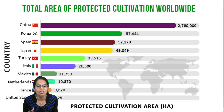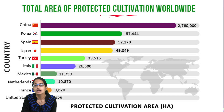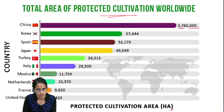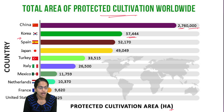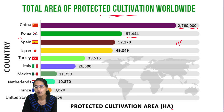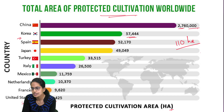Looking at a worldwide picture, China leads in terms of protected cultivation with nearly 27 lakh hectares of land under protected cultivation, followed by Korea with 57,000 hectares and the United States with just 8,000 hectares. India falls far behind with just 110 hectares, mainly in the regions of Maharashtra and Gujarat.